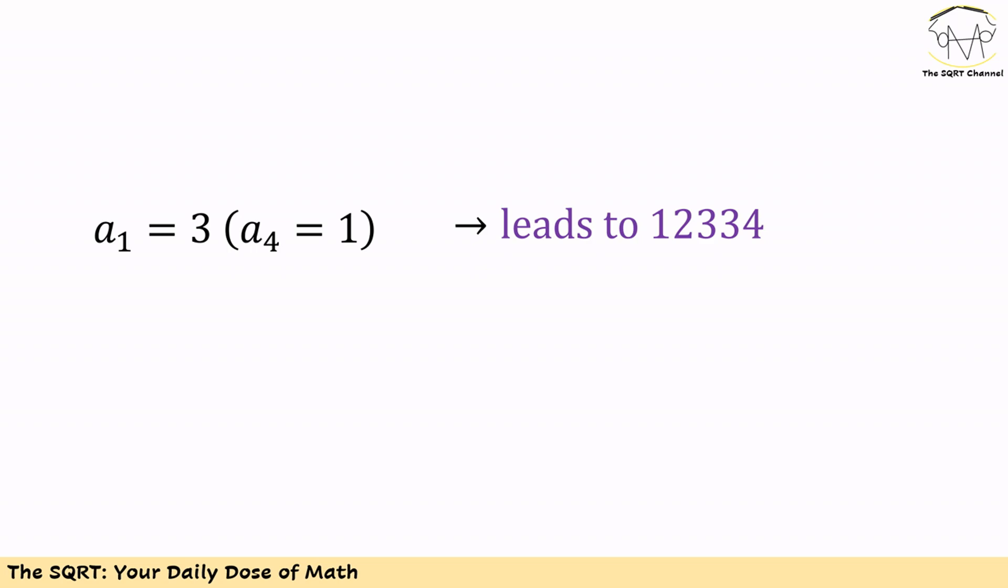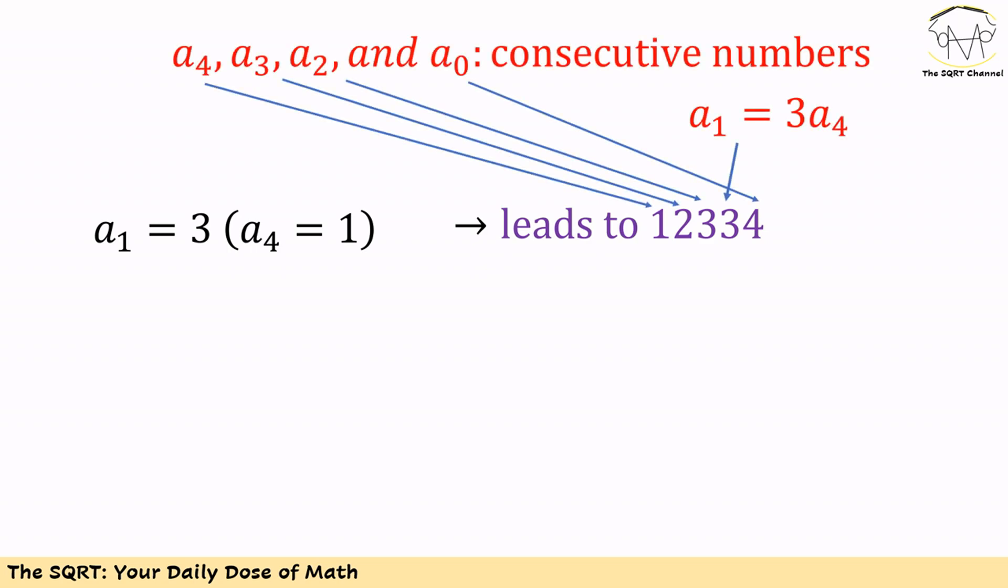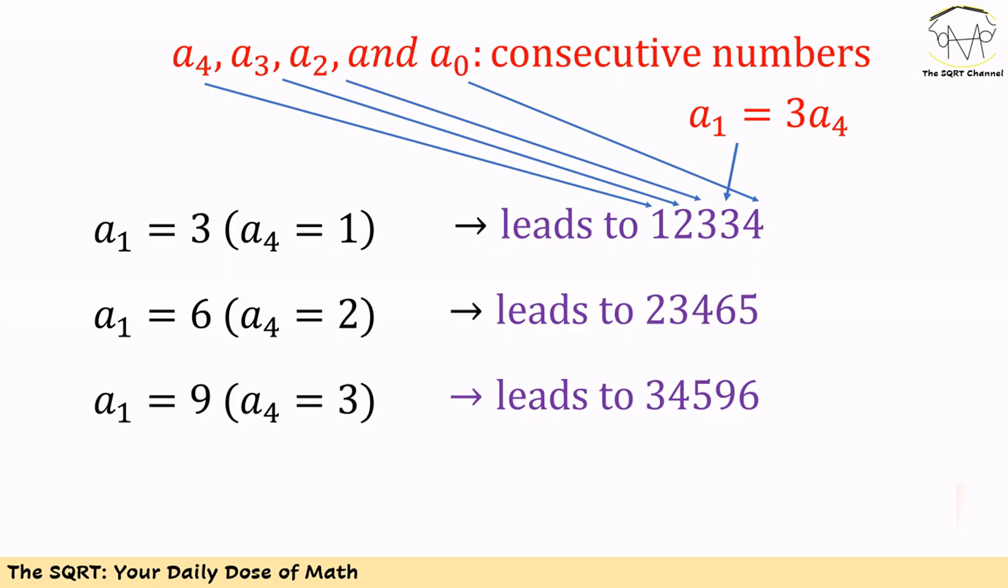Based on these, we have a few options for the final number. If we start with a1 equals 3, then the number should be 12334. You can see that 1, 2, 3 are consecutive numbers, 3 in position a1 is 3 times 1 in position a4, and the last digit is 4, which is consecutive to the digit in position a2. If we start with a1 equals 6, then it leads to 23465 for the final number. Similarly, if we start with a1 equals 9, then this leads to 34596 for the final number.